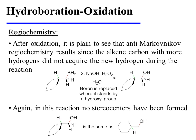Anti-Markovnikov regiochemistry results because the carbon of what was once the alkene that has more hydrogens has not acquired the new hydrogen during the reaction — the outcome is the opposite of what Markovnikov's mnemonic would predict. In this reaction, no stereocenters have been formed, so while the product may be drawn with wedges and dashes, that is not essential.